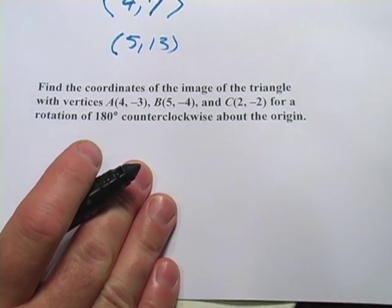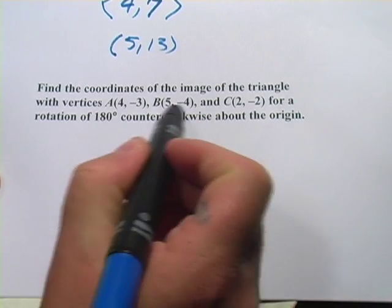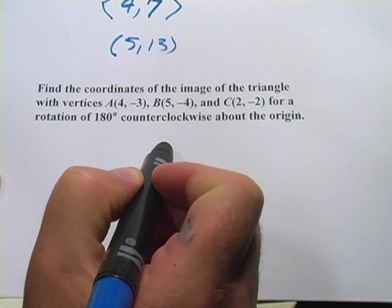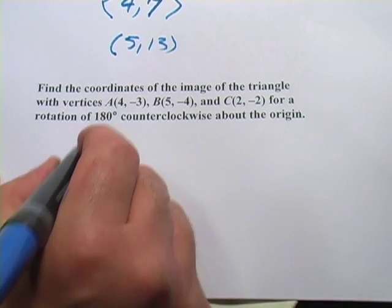Let's look at one more here. It says, find the coordinates of the image of the triangle with vertices A(4, -3), B(5, -4), and C(2, -2) for a rotation of 180 degrees counterclockwise about the origin. So this is going to be a little bit more tricky.